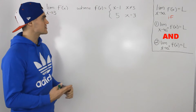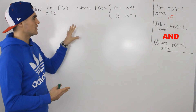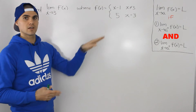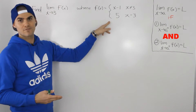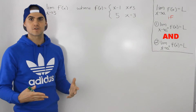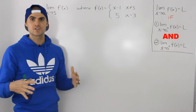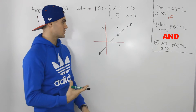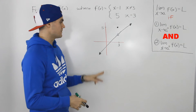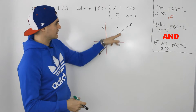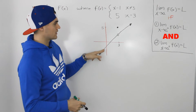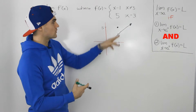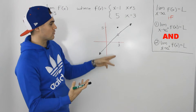Now, my suggestion is whenever you get a limit with a piecewise function, if possible, always graph the piecewise function first so you can see everything visually. So taking that piecewise function and graphing it, we have this line x minus 1 that's defined for every x value other than 3.